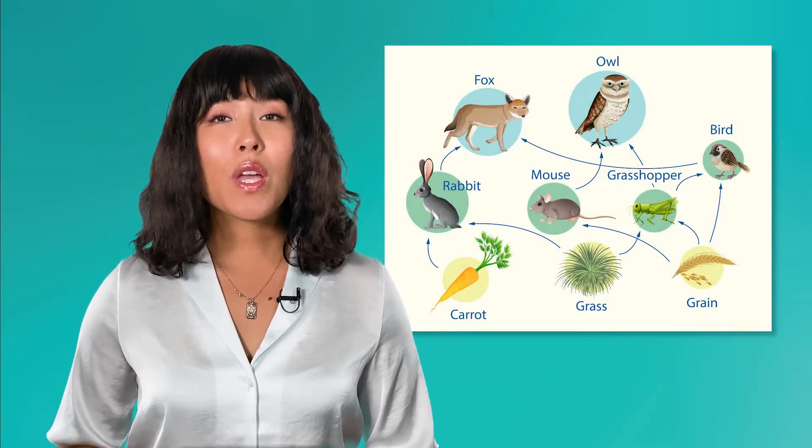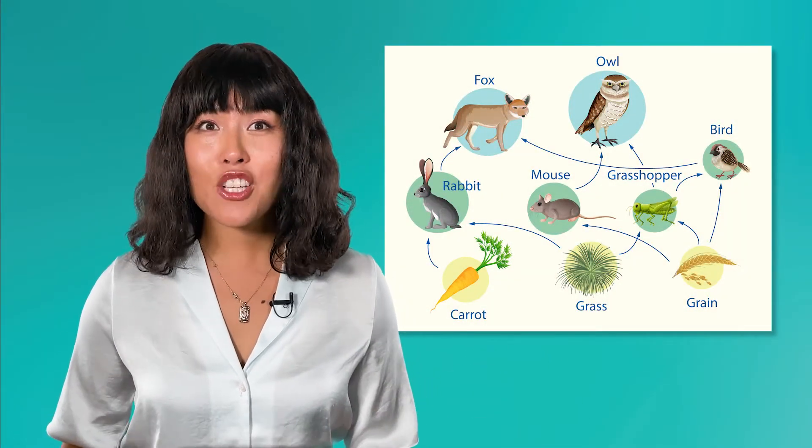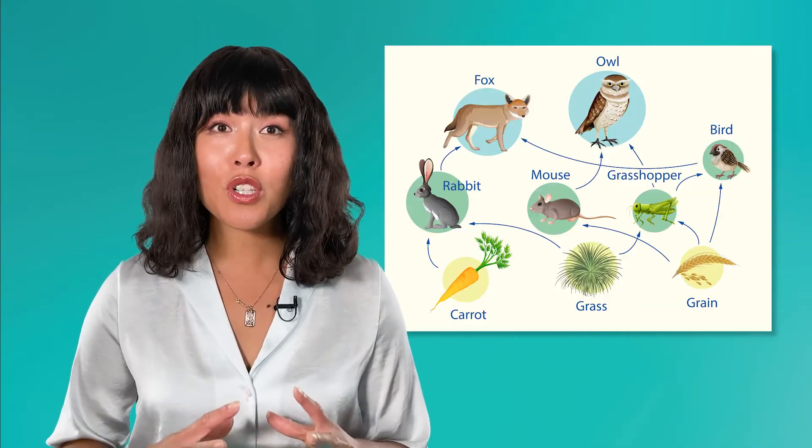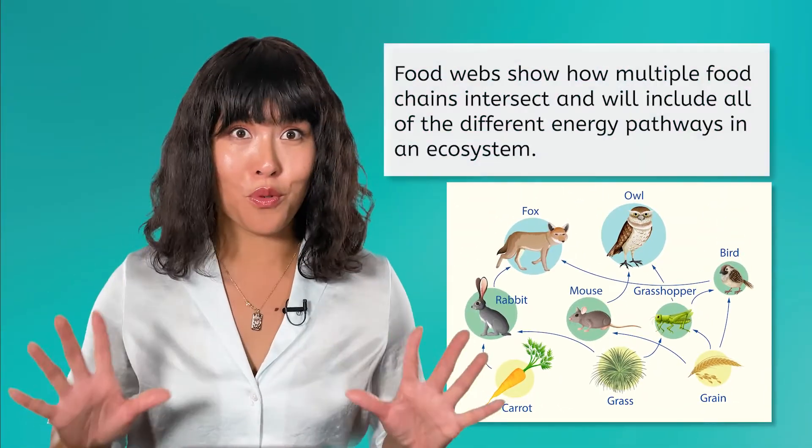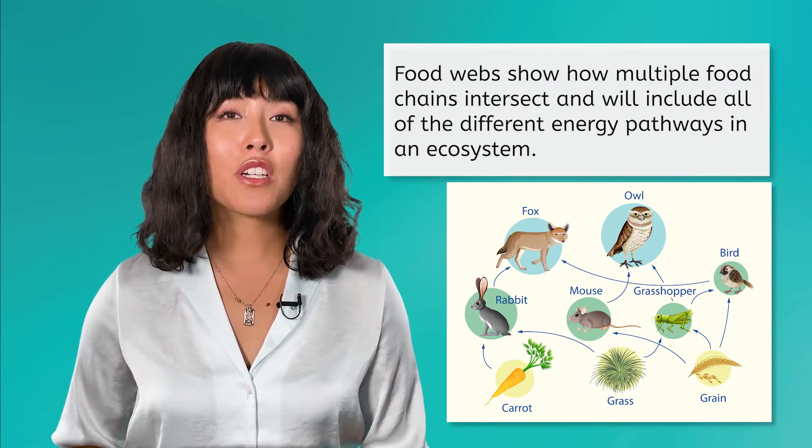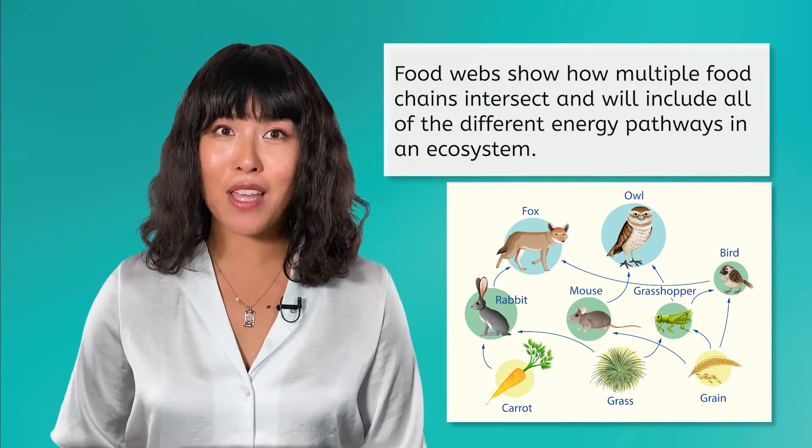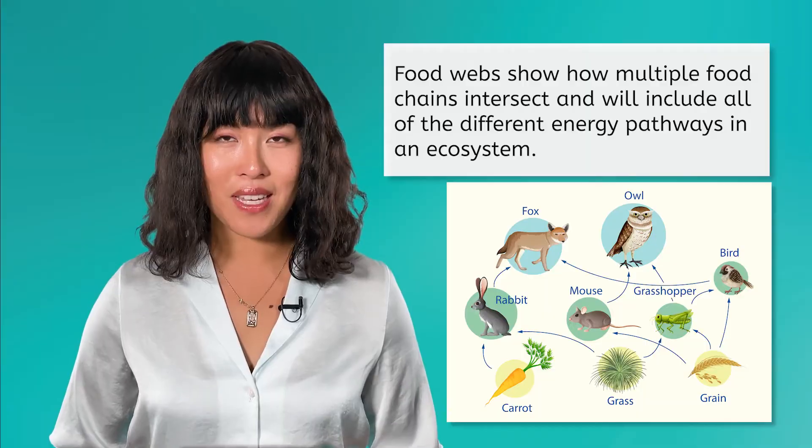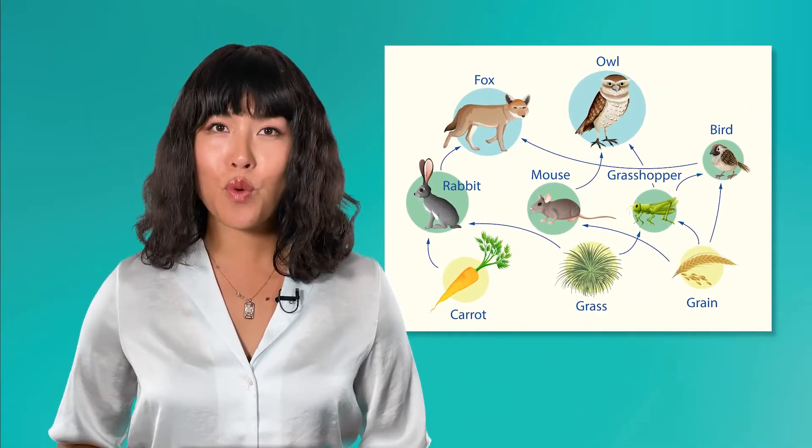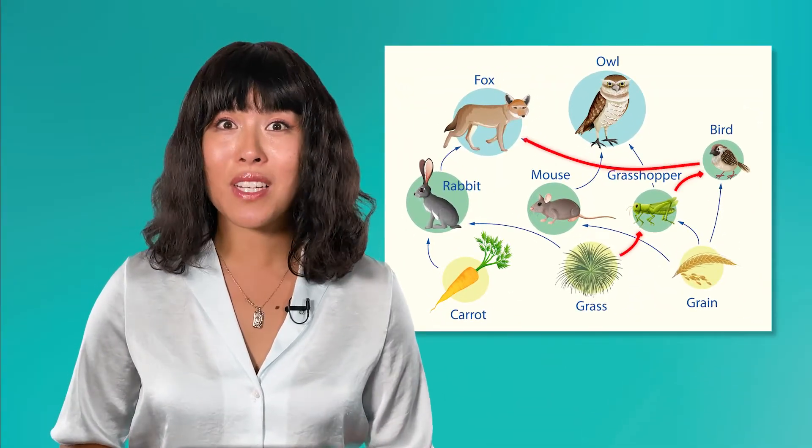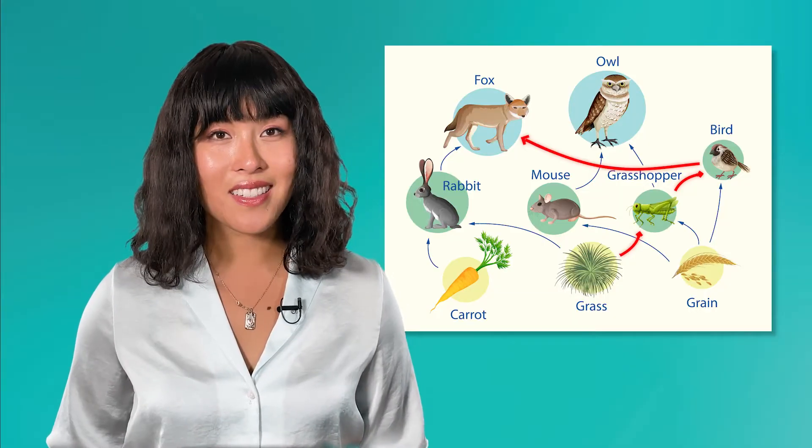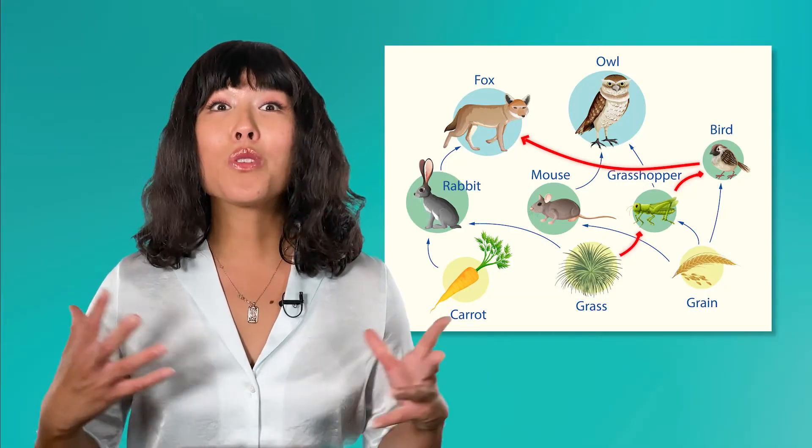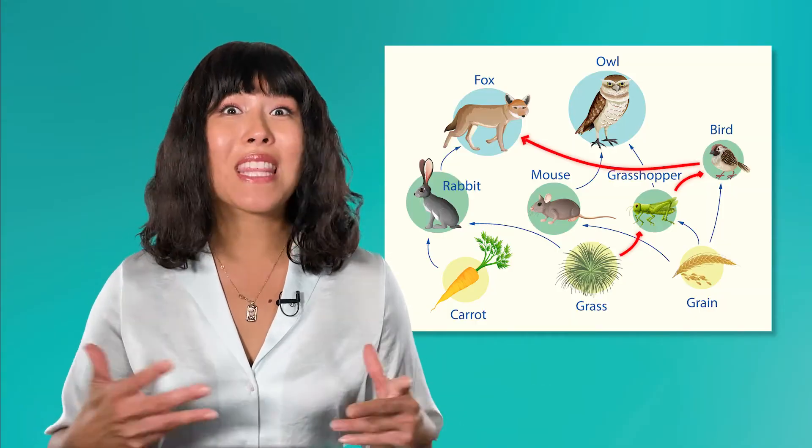Because of this, we use food webs to show the energy flow from producers up to consumers. Food webs show how multiple food chains intersect and will include all of the different energy pathways in an ecosystem. If you look carefully at this food web, you will see the food chain we discussed earlier. Grass to grasshopper to bird to fox. However, there are multiple other food chains within this web.